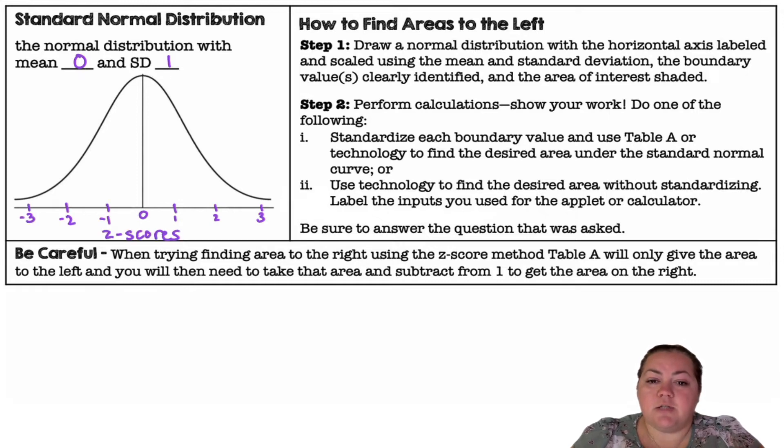So how do we find the area to the left? You draw your normal distribution with the horizontal axis labeled and scaled using the mean and standard deviation. The boundary value or values will be clearly identified and the area of interest will be shaded.